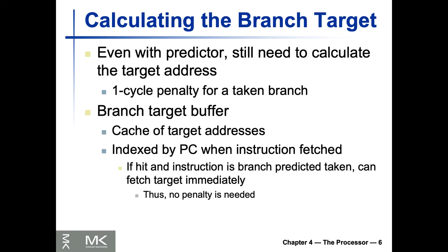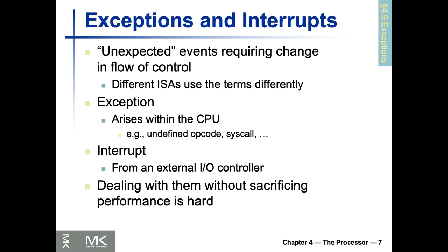Even with the two-bit predictor, normally we need to have one cycle penalty on average for many cases. There are many ways to handle this. Now let's talk about exceptions and interrupts.